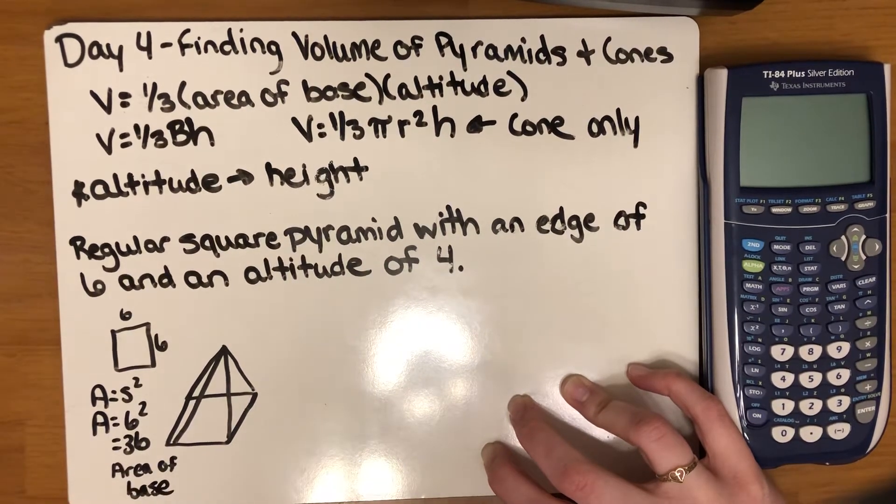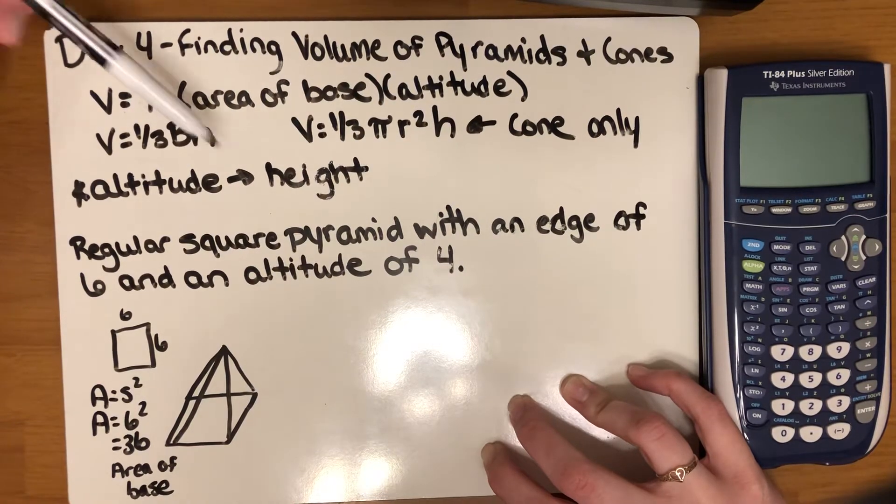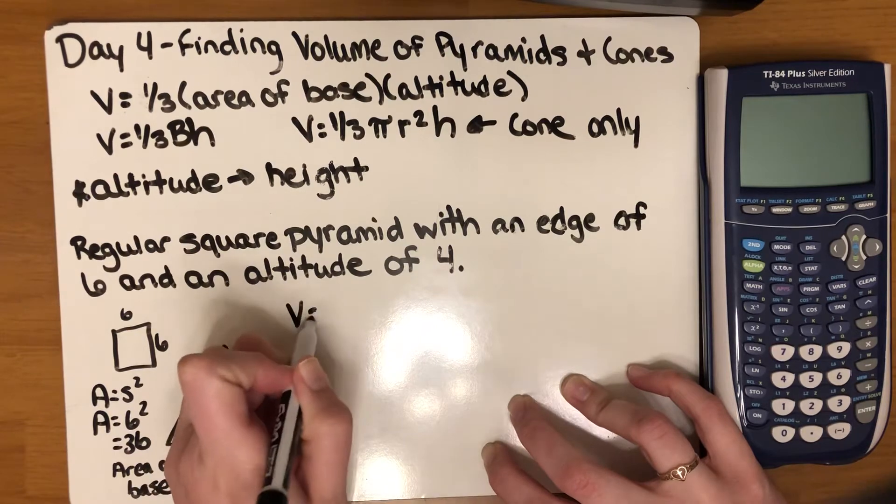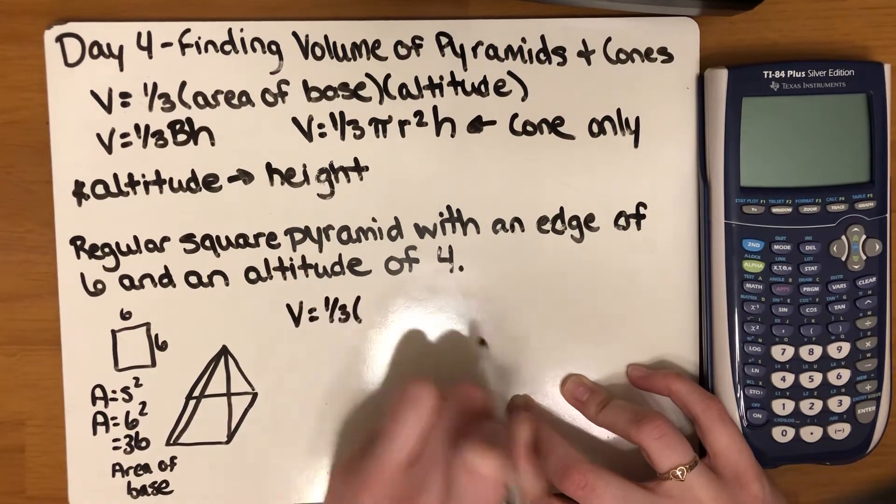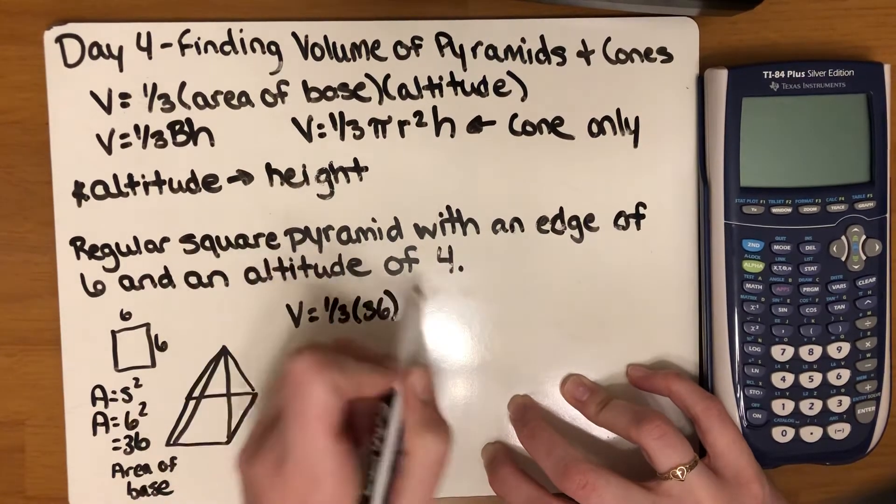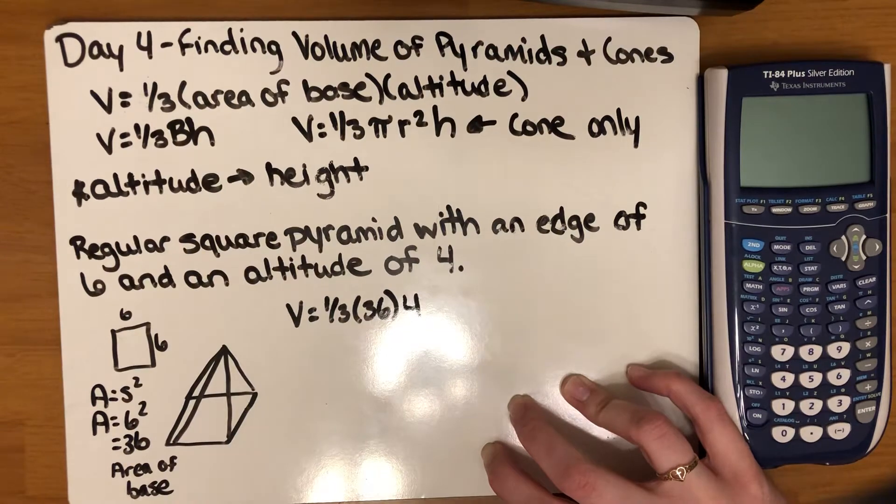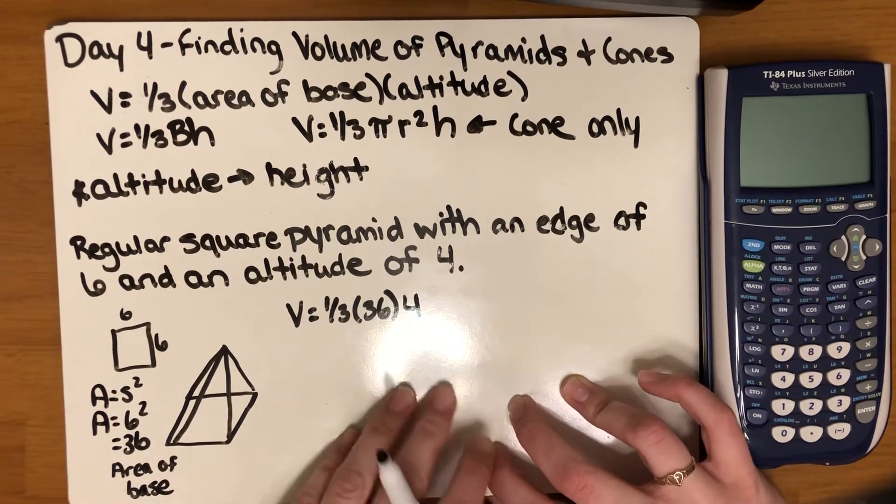Next thing we need to identify is what the altitude or height is. In this one the altitude is four. For my formula it would be one-third times area of the base which is 36 times the altitude which is four or the height. You can just put this into the calculator at this point and you'll be all right.